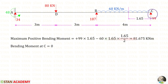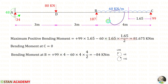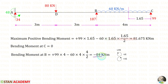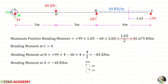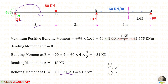Point C is a simply supported end so the moment there is zero. At point B: RC acts anti-clockwise (positive) over distance 4, and the UDL acts clockwise (negative) giving minus 84. At point A, using the right-hand side rule, MA acts anti-clockwise (negative). At point D: MA acts anti-clockwise (negative), RA acts clockwise over a distance of 3 (positive). Finally we get the moment at D as 54 kN·m.